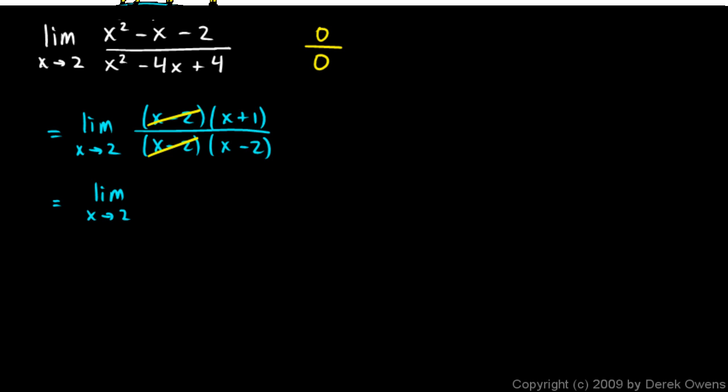The limit as x approaches 2 of (x + 1)/(x - 2). And you see we still have a problem. As x gets close to 2, that denominator gets really close to 0.